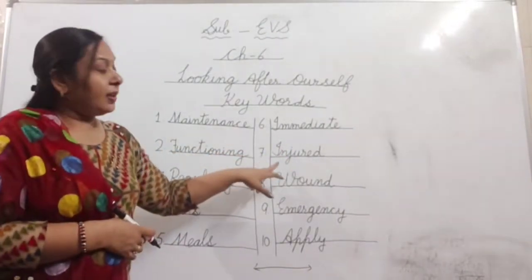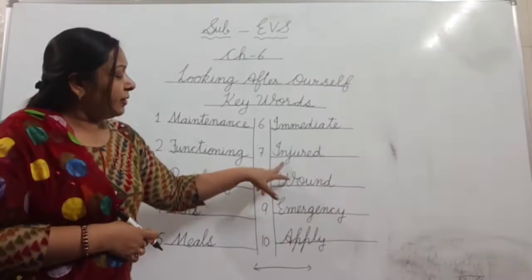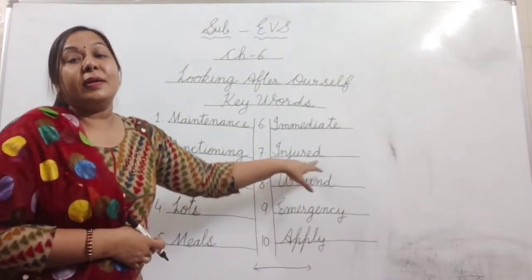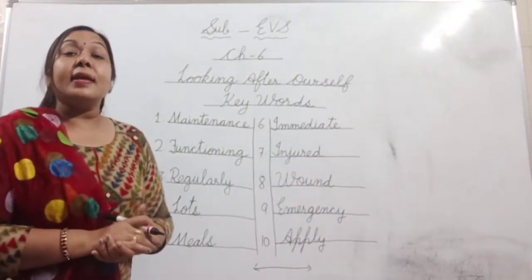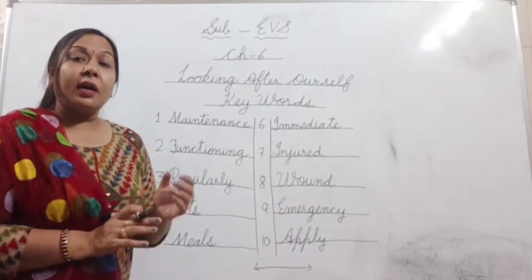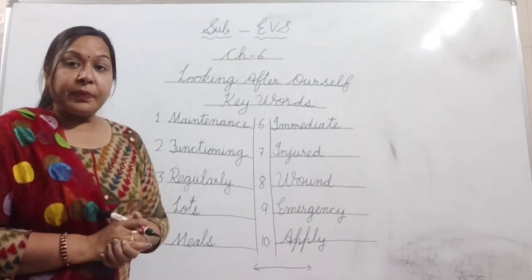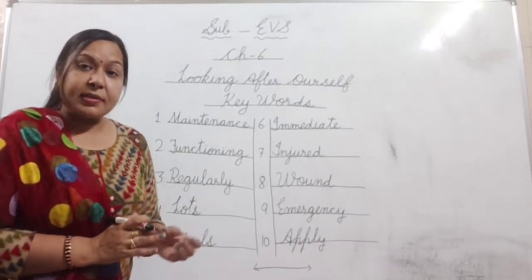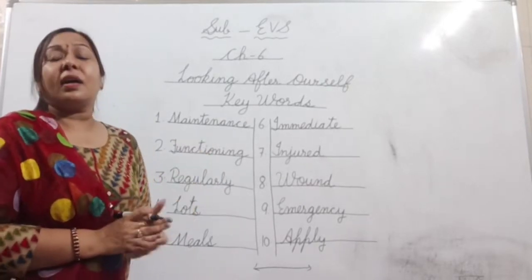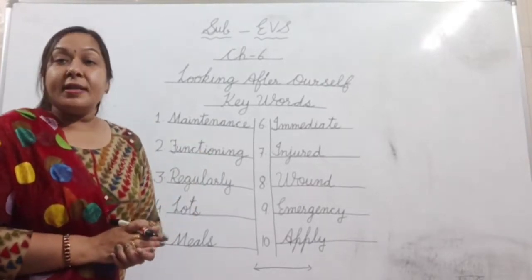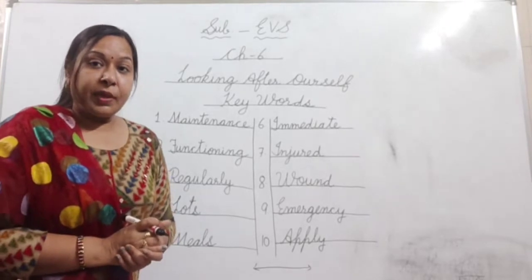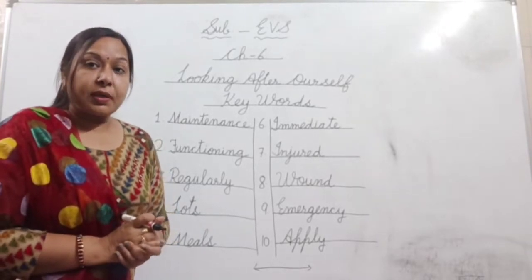Number seven: i-n-j-u-r-e-d — it's injured. Injured means hurt or damaged. Hurt ho jana, damaged ho jana means chot lag jana. Kuch chot lag jana, injury ho jana.